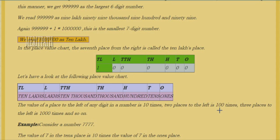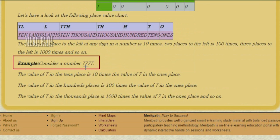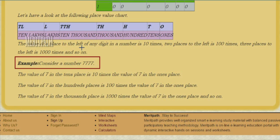The value of a place to the left of any digit is ten times the place to its right. Two places to the left is one hundred times, three places to the left is one thousand times, and so on — the value increases by ten times every time we move from right to left. Let's understand this by taking an example: the number seven thousand seven hundred seventy-seven — 7,777.